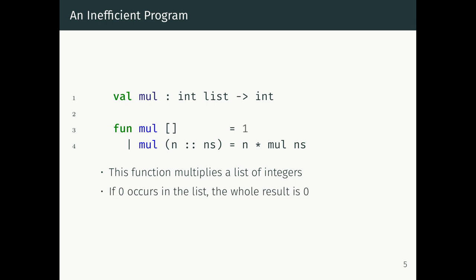This is actually quite inefficient, because even if you have a list of a thousand numbers and you see a zero at the very first element, you're still going to do those thousand multiplications. So you might think: we can make this program a little bit less inefficient. Maybe what we can do is add a case to detect whether zero occurs in that list. If it does, we'll do an early exit — if we see zero at the front of the list, we'll immediately return zero.